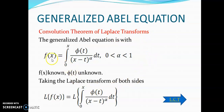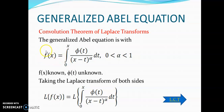The generalized Abel equation is given by f(x) = integral from 0 to x of φ(t) divided by (x minus t)^α dt, where the value of α is between 0 and 1. Here f(x) is the known function and φ(t) is the unknown function. Solving this integral equation means we have to find the value of φ(t).